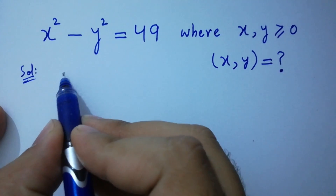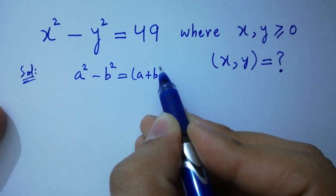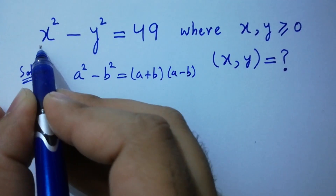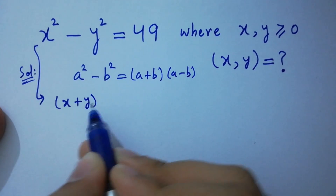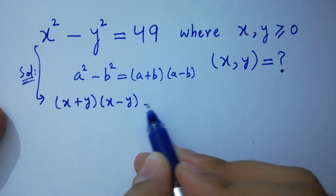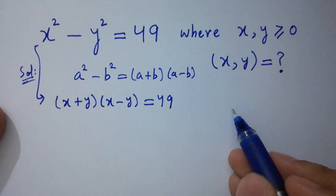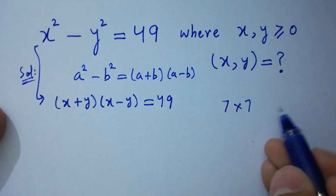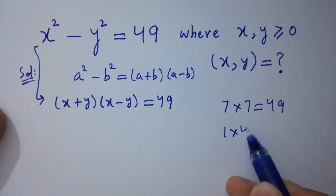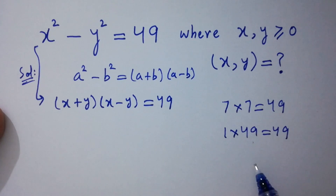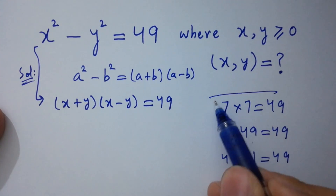We know the formula a squared minus b squared equals a plus b times a minus b. Applying this, we have x plus y times x minus y equal to 49. We can see there are 3 cases: 7 times 7, 1 times 49, and 49 times 1, all equal to 49.